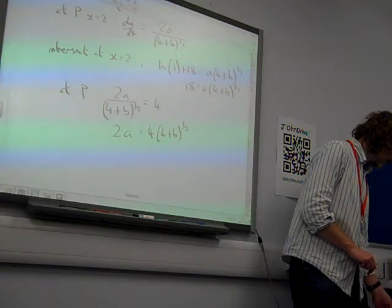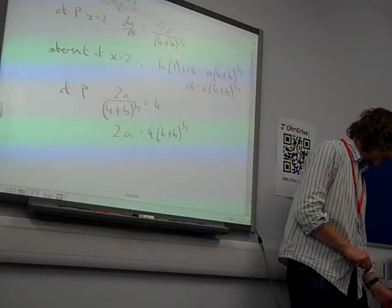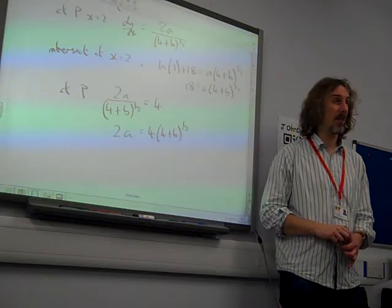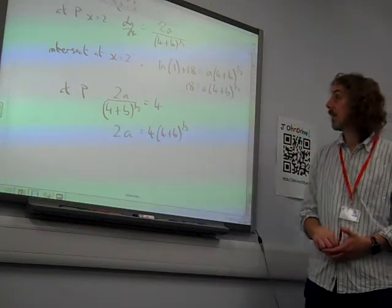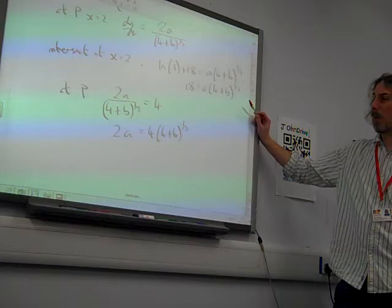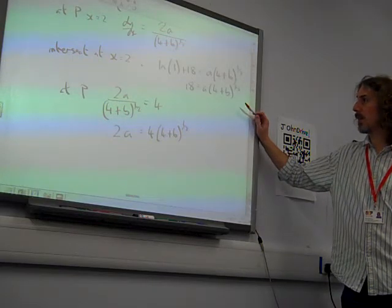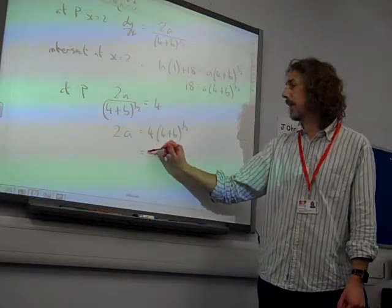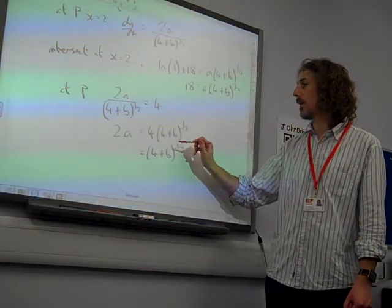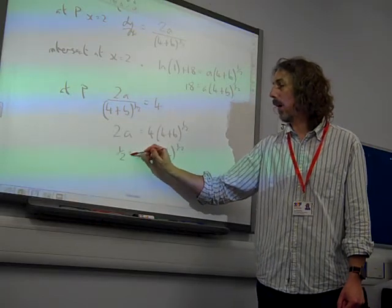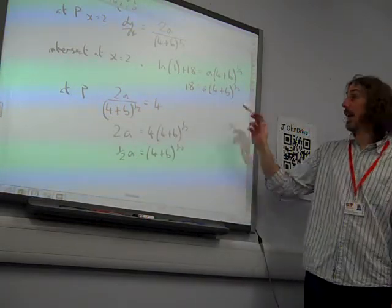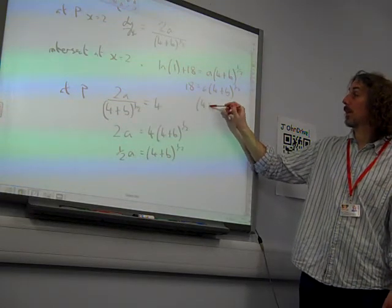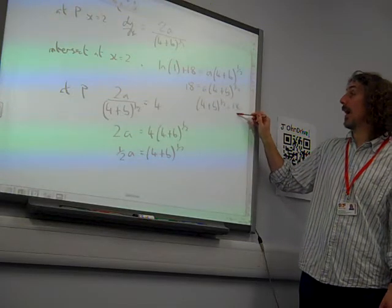Where can we go next with this? Yes. Well, we're solving simultaneous equations. What would be the easiest way of doing this? I think this one appears to be saying to me that (4 plus b) to the half is equal to a half a. And here,